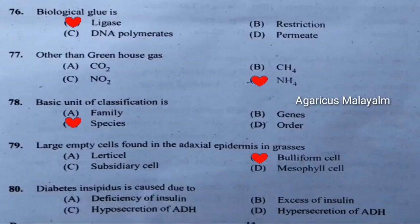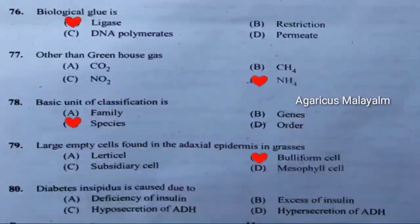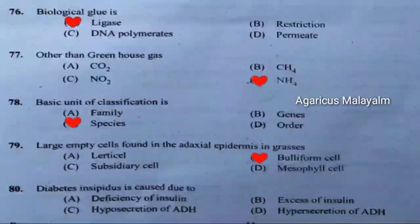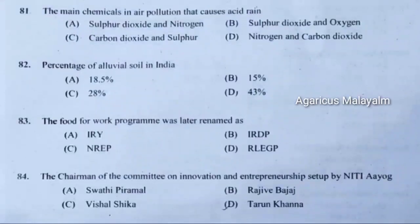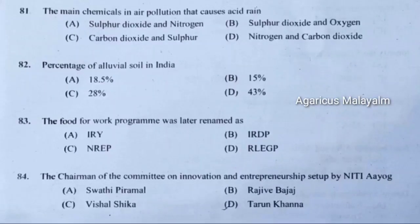Eightieth question: Diabetes insipidus is caused due to. Correct answer is option C — hyposecretion of ADH. Eighty-first question: The main chemical in air pollution that causes acid rain. Correct answer is option A — sulfur dioxide and nitrogen oxides.